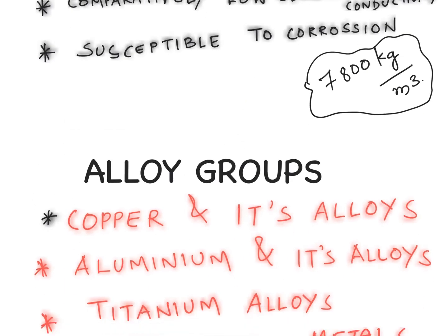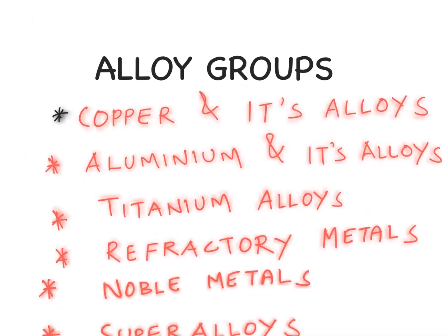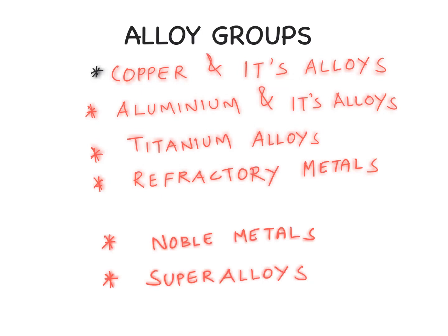Because of all these drawbacks, man wanted better alloys to meet his requirements. The types of non-ferrous alloys we will talk about in this course are: first, copper and its alloys; second, aluminum alloys; and third, titanium alloys. Moving further down the list, we have refractory metals, noble metals, and superalloys — named that way because they possess certain special characteristics.